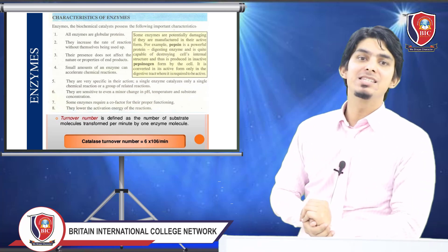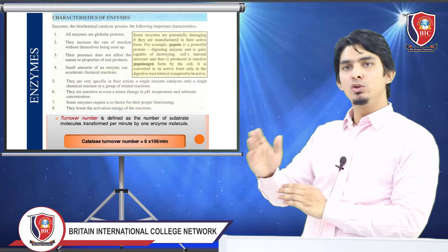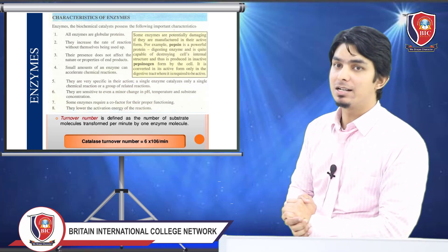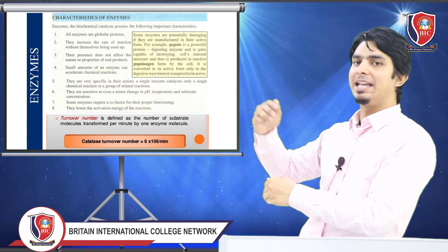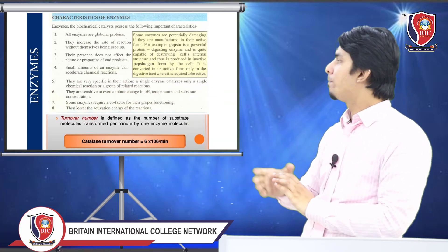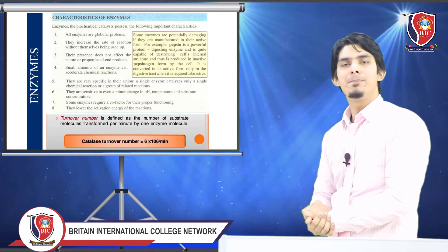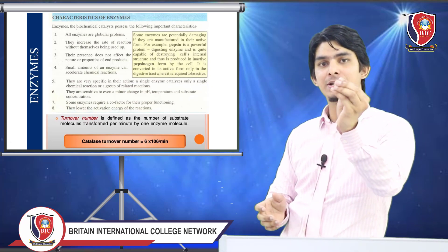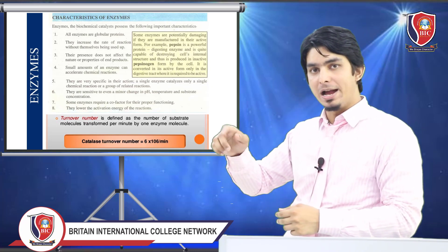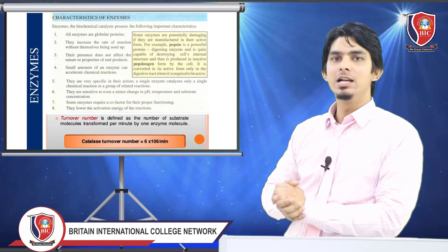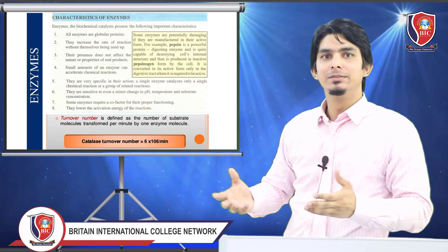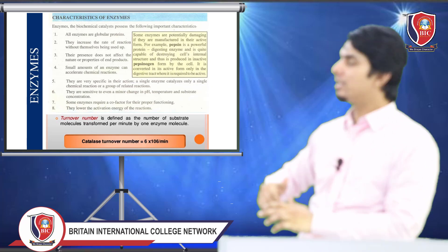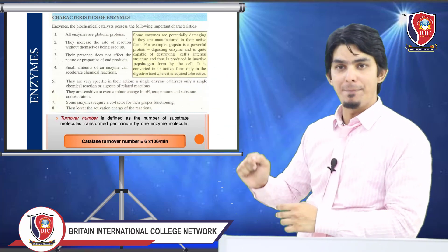Some enzymes are potentially dangerous if released in active form, as they can damage and digest the cell's own structures. Therefore, they are released in inactive form. For example, pepsin is a powerful protein-digesting enzyme. In the stomach it is kept as the inactive form pepsinogen. If released in active form, it would break down the cell's own structures — this damage is why it must be stored and released as an inactive precursor.